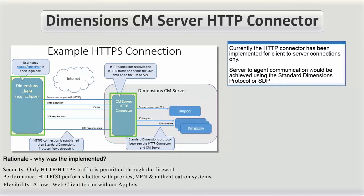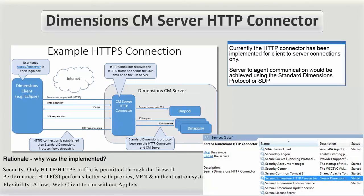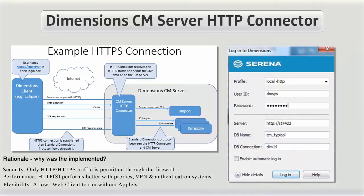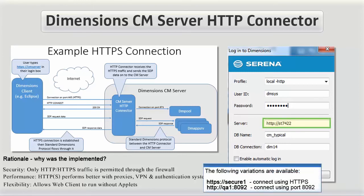Finally, the results are returned from the HTTP connector to the client. There is an additional service called Suena Dimensions HTTP connector, installed and configured as part of the Dimensions server installation. To utilize the HTTP connection, supply the usual login details and simply replace the host name with the HTTP or HTTPS prefix and, if necessary, the port number.